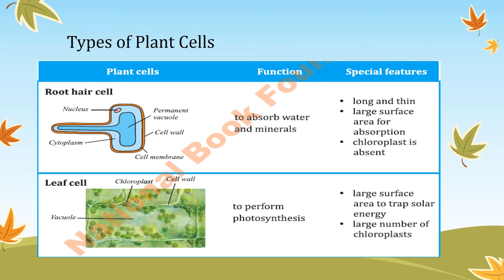The second type is leaf cells, which are present in the leaf. They have a large surface area to trap more sunlight energy for photosynthesis, and a large number of chloroplasts are present in them. The green color of leaves is due to the presence of these leaf cells.